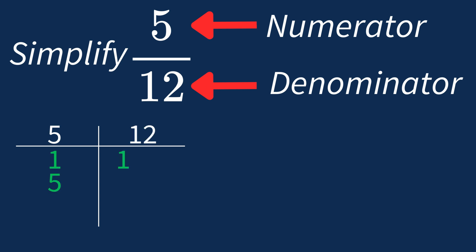For 12, the factors are 1, 2, 3, 4, 6, and 12.